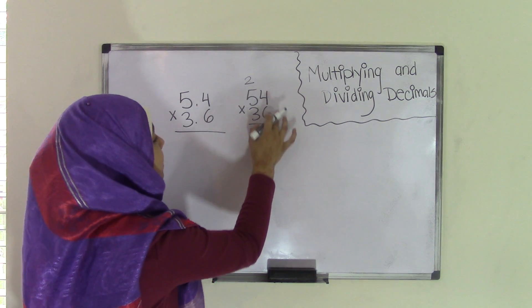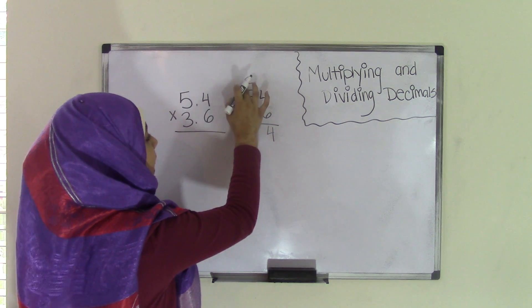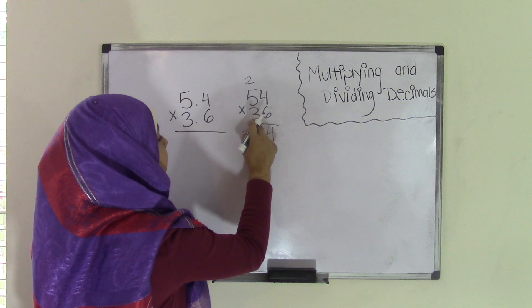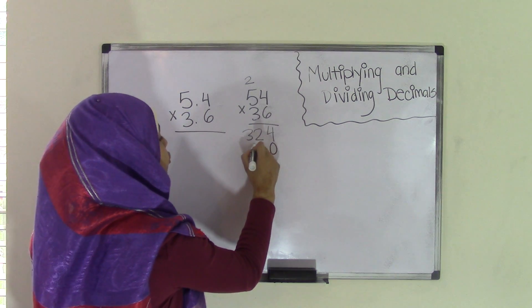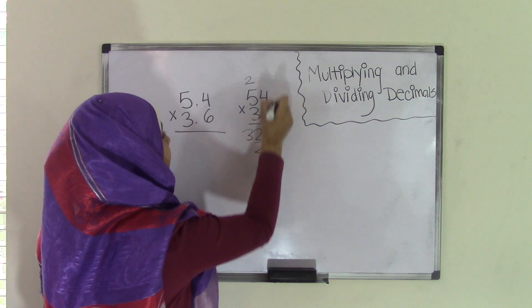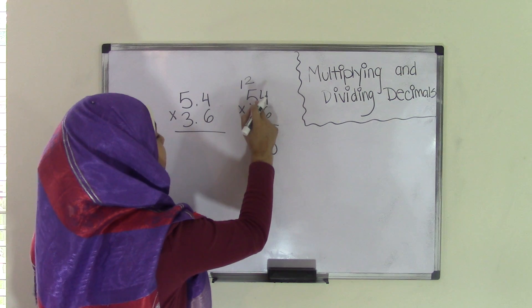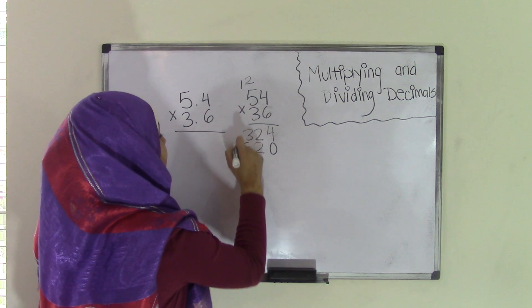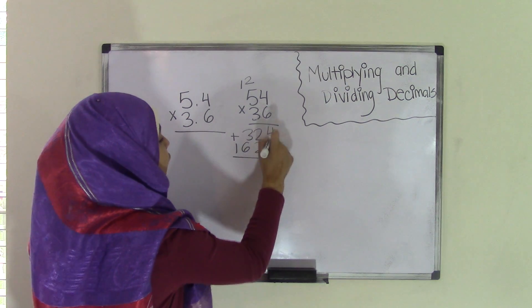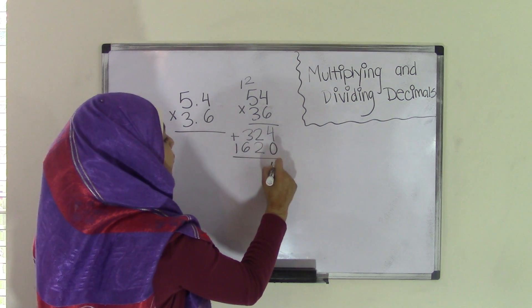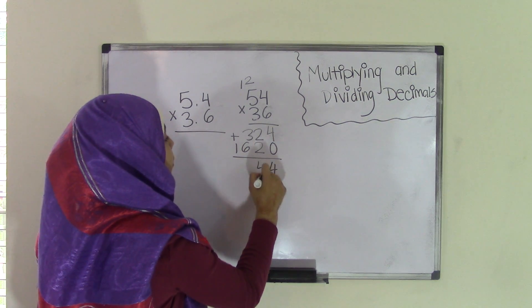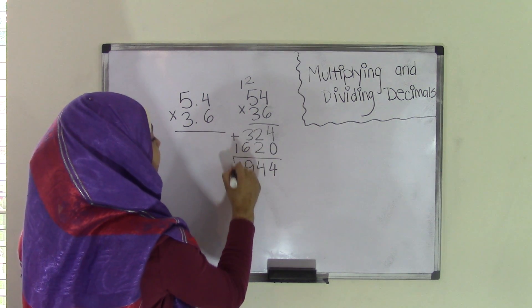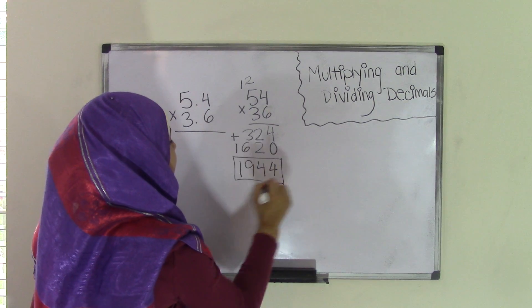Now we have 6 times 5, which is 30, plus that 2 equals 32. Now put a 0 in order to move on to the tens place. 3 times 4 is 12 — carry the 1 over the 5. 3 times 5 is 15, plus that 1 is 16. Now add the two products: 4 plus 0 is 4, 2 plus 2 is 4, 3 plus 6 is 9, and bring down the 1. Now we have our product of 1944.